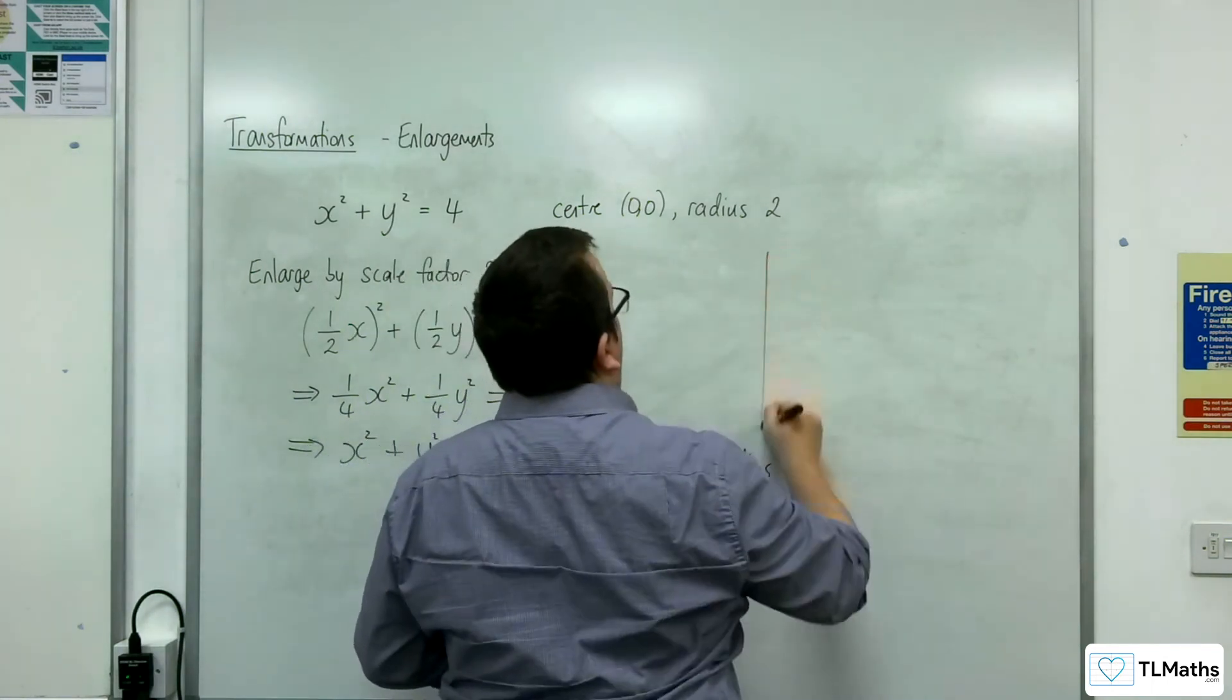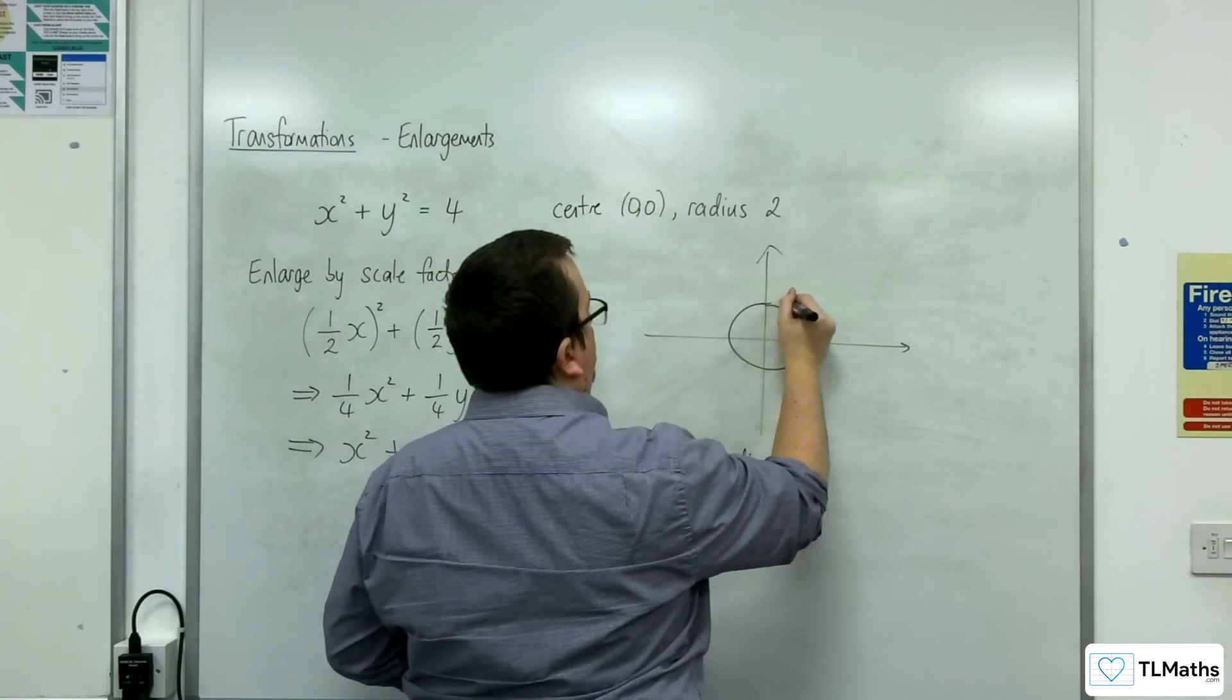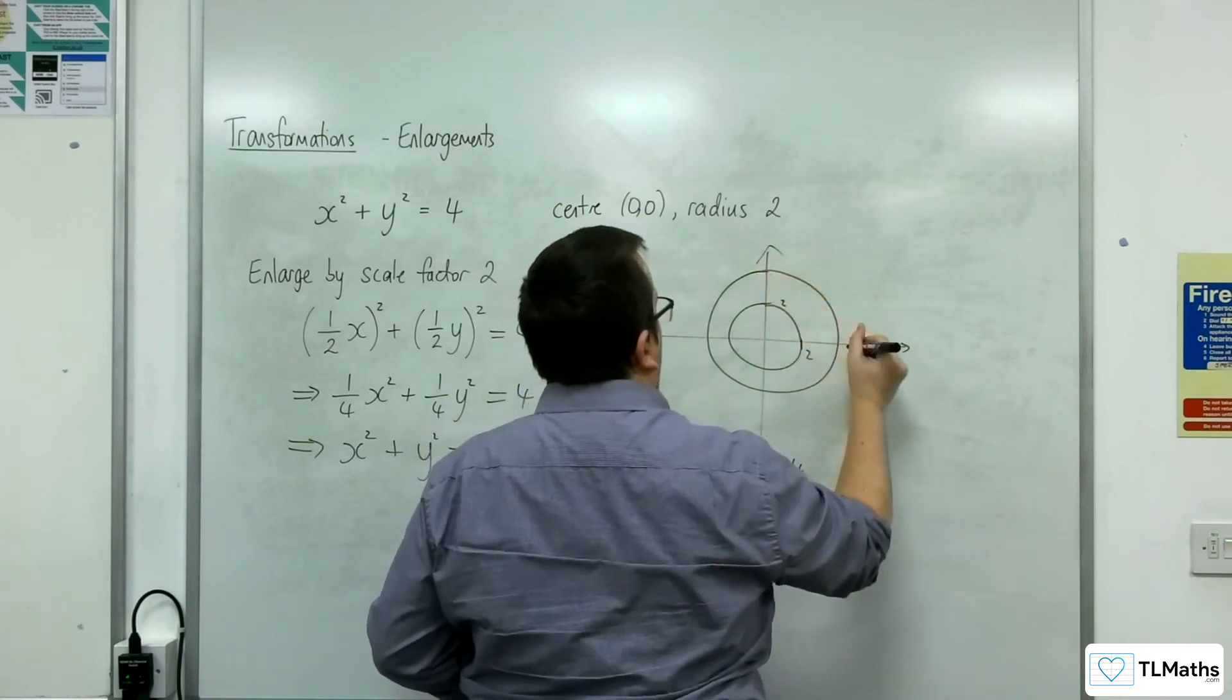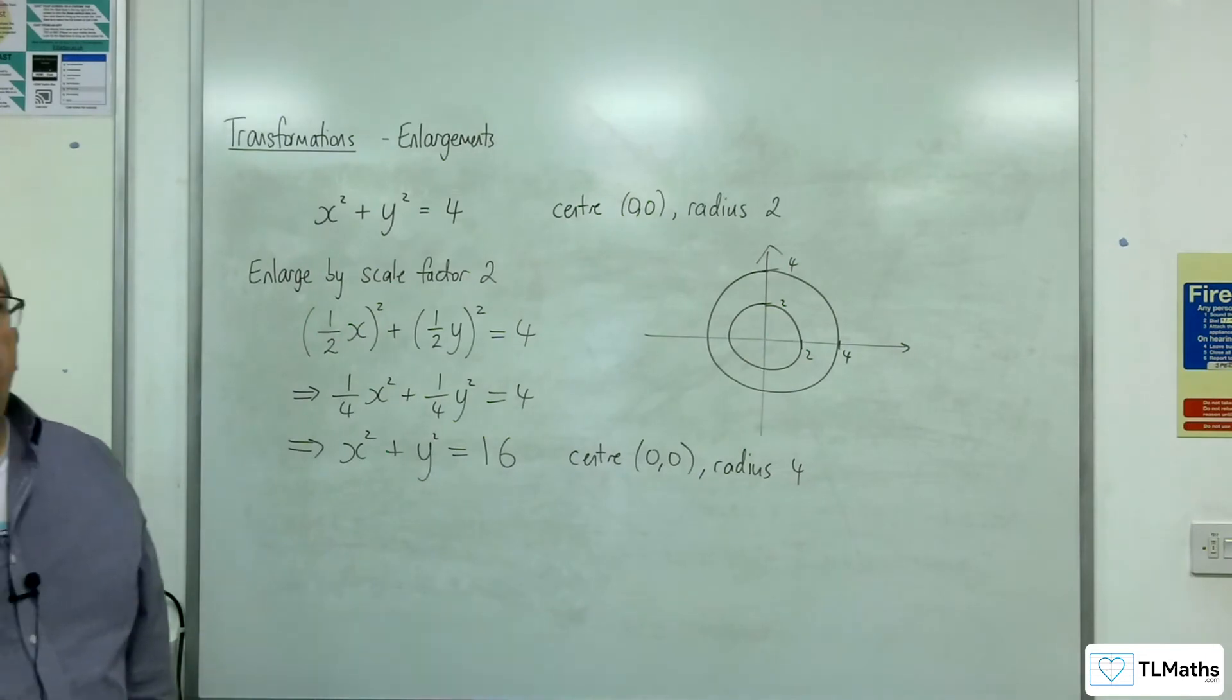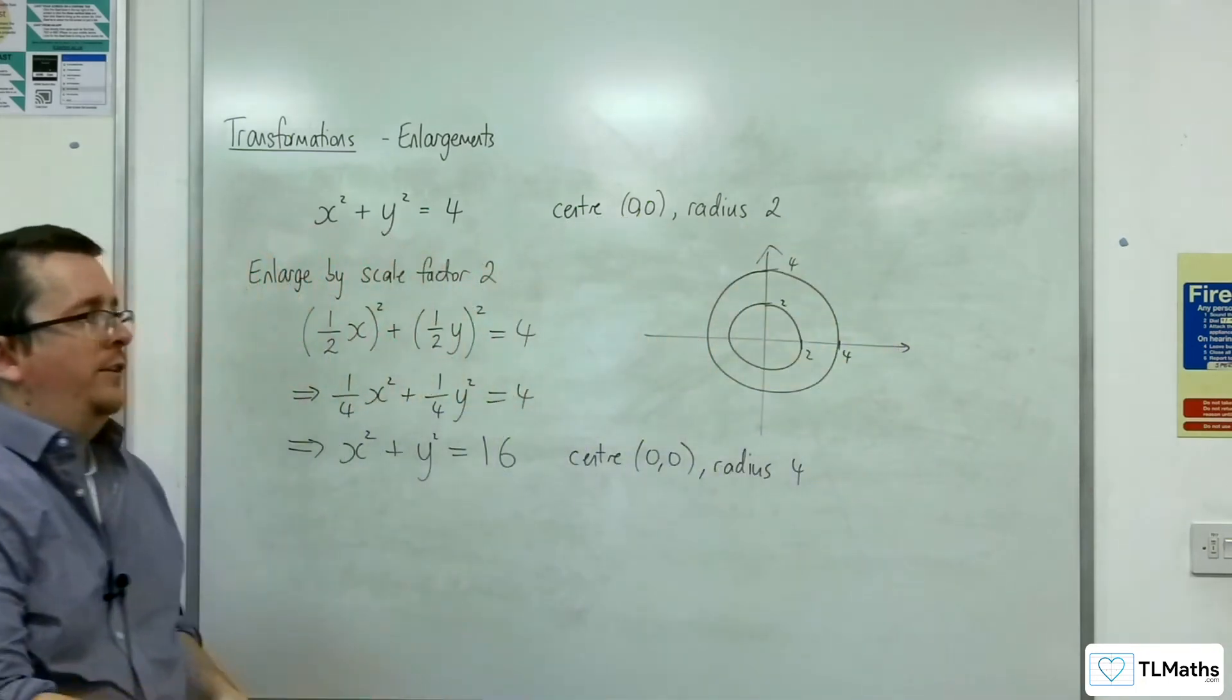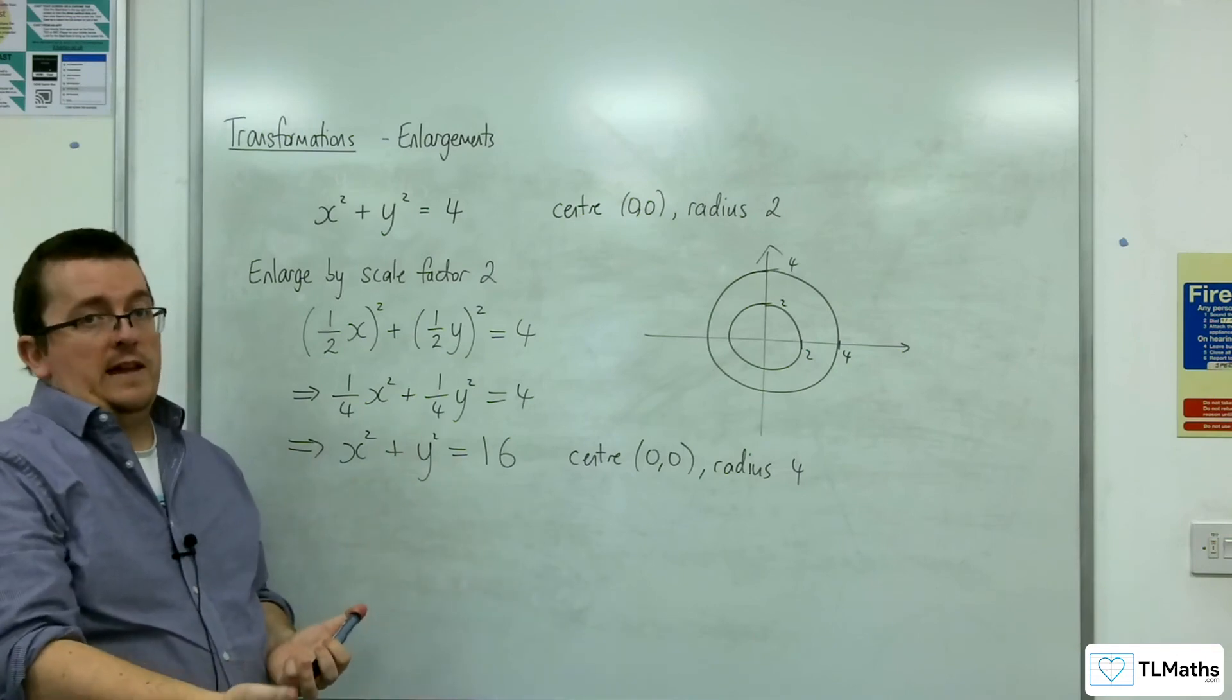So whereas the original circle looked like that and had radius 2, the new circle has radius 4 and has been stretched and enlarged in both directions by scale factor 2, which has quadrupled its area.